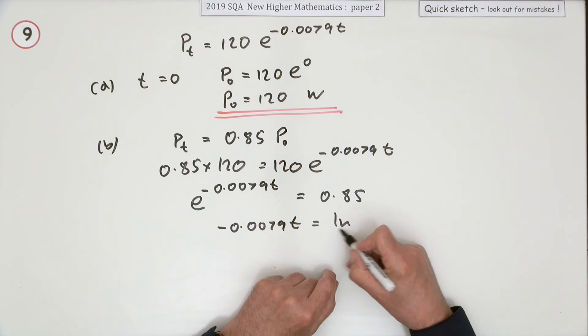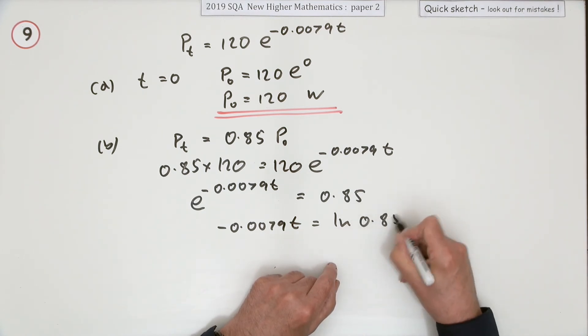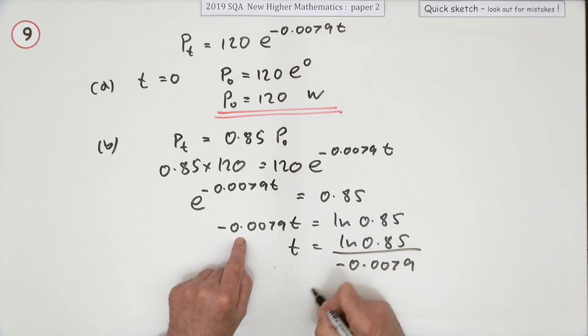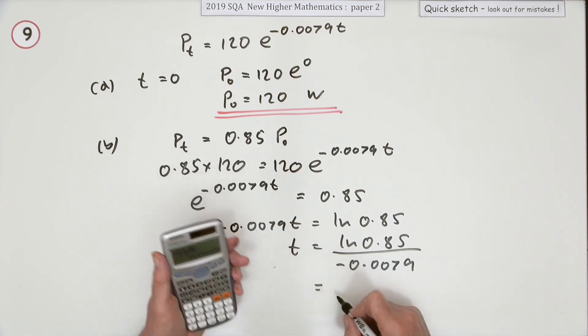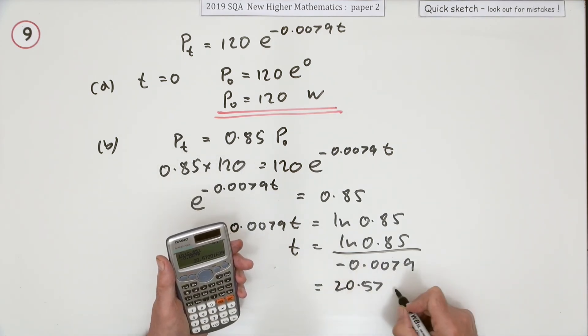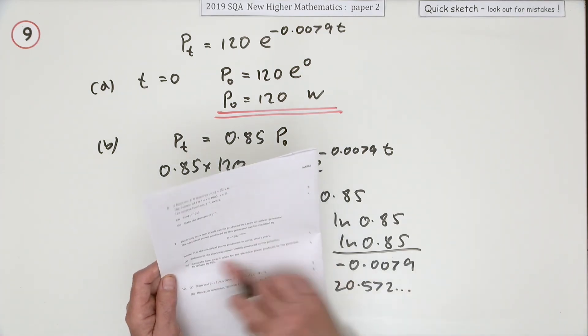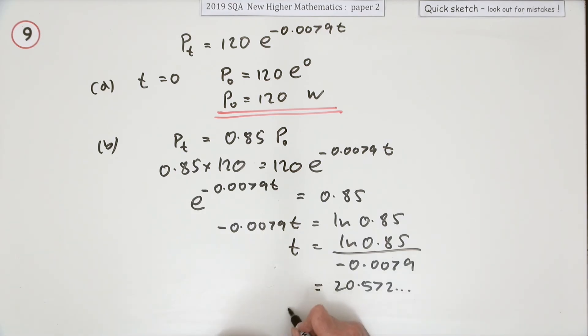That's a negative number divided by negative 0.0079. Now you use your calculator, and when you press the buttons you get 20.572... It doesn't say anything about rounding an answer off, but we know that's in years, so we'll say t = 20.6 years.